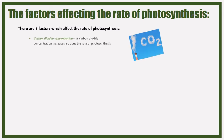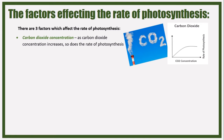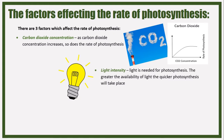Now, the factors affecting the rate of photosynthesis. There are three factors. The first is carbon dioxide concentration - the higher the amount of carbon dioxide available, the higher the rate of photosynthesis. The second factor is light intensity - the more light, the quicker the process of photosynthesis - and that graph is basically the same as the carbon dioxide one.